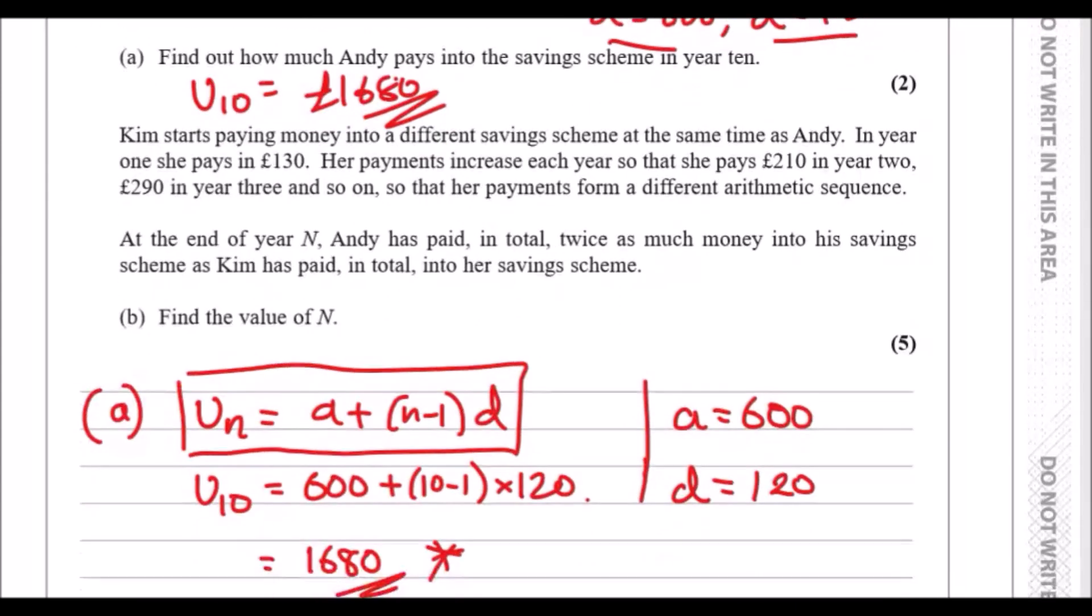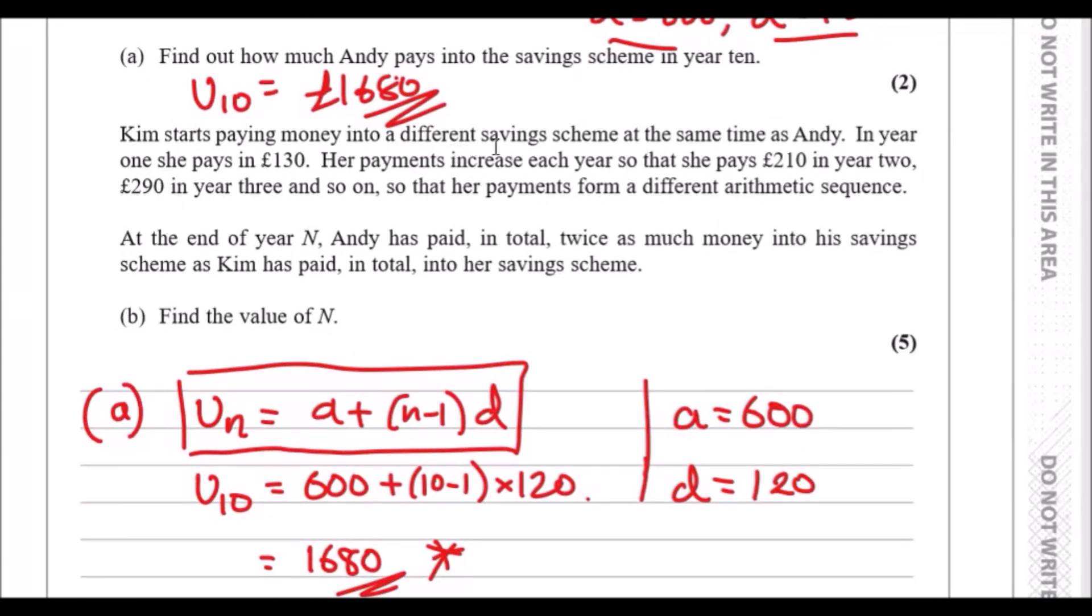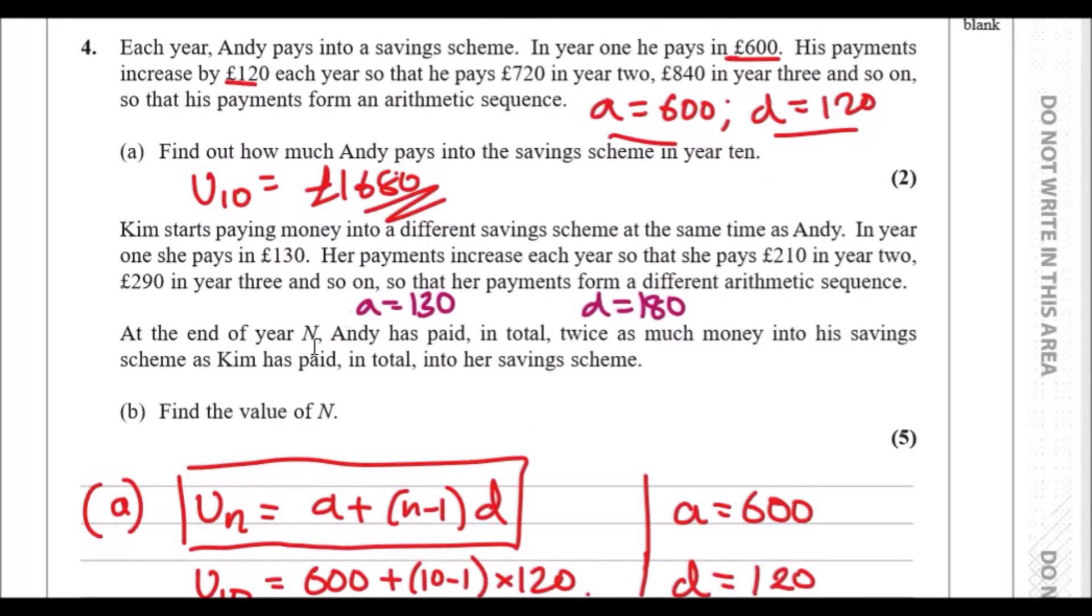Now here comes the main bit. So Kim starts paying money into a different saving scheme at the same time as Andy. This is a totally different arithmetic sequence. In the first year, she pays £130. Her payments increase each year so that she pays £210 in the second year, £290 in year three, and so on. So they don't tell you the common difference here. But we have to realise that it's going up by £80 every year. And if her first payment was £130, so that's the slight key differences here.